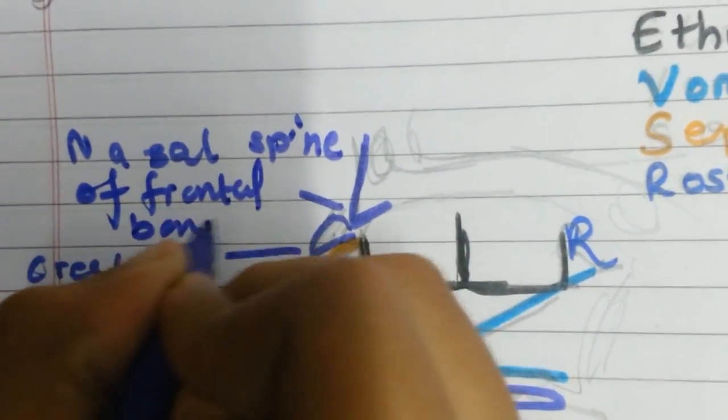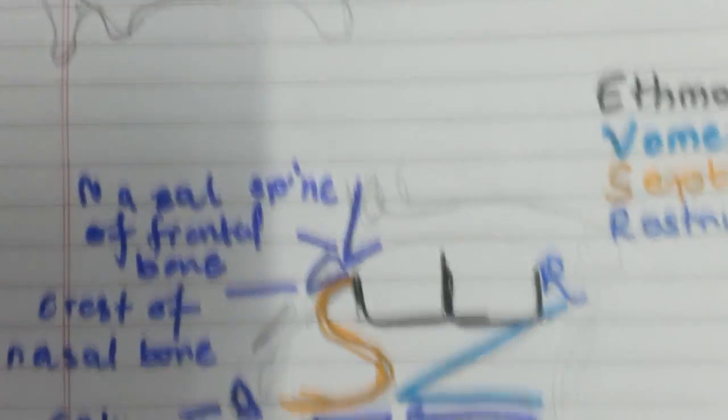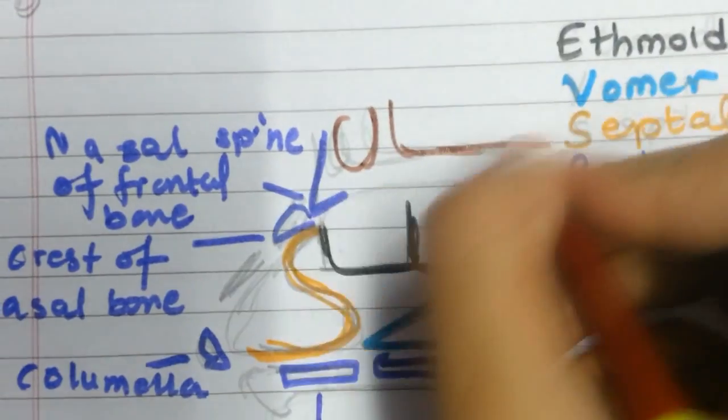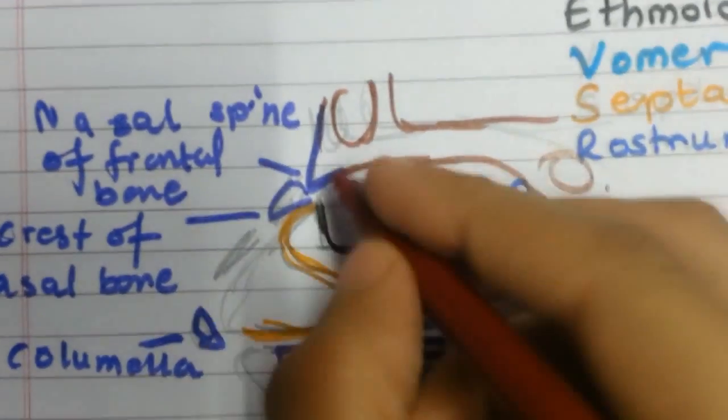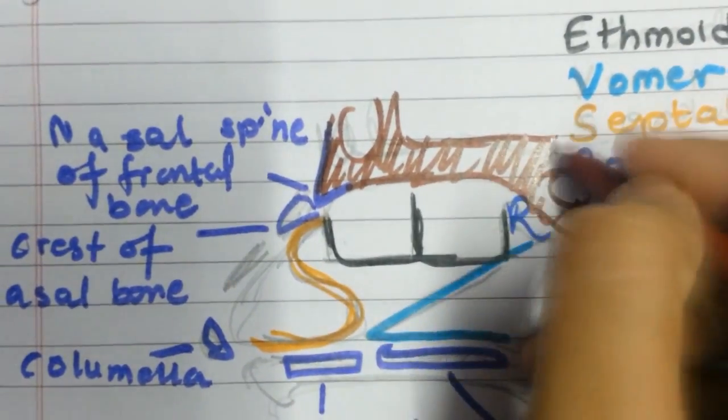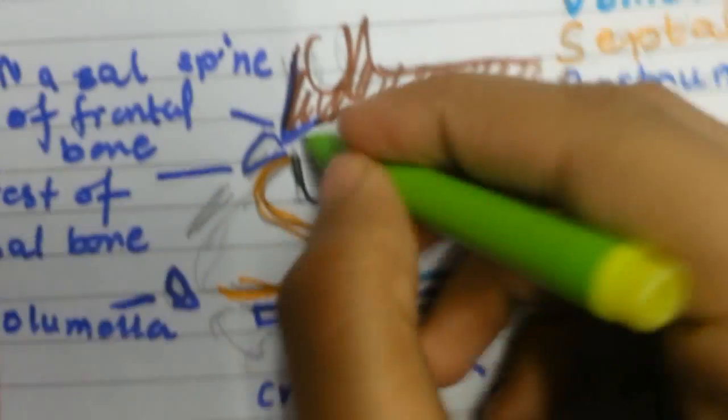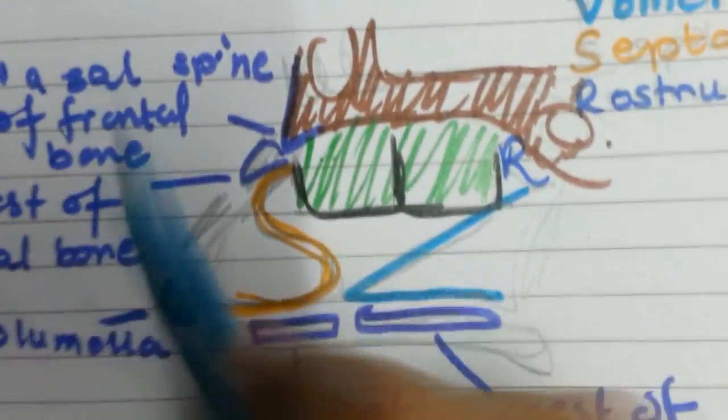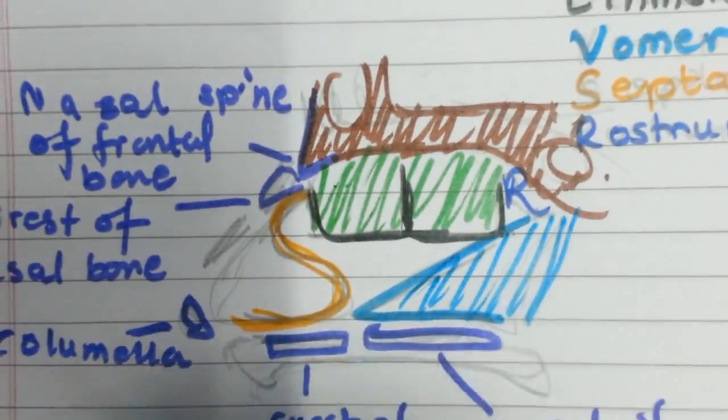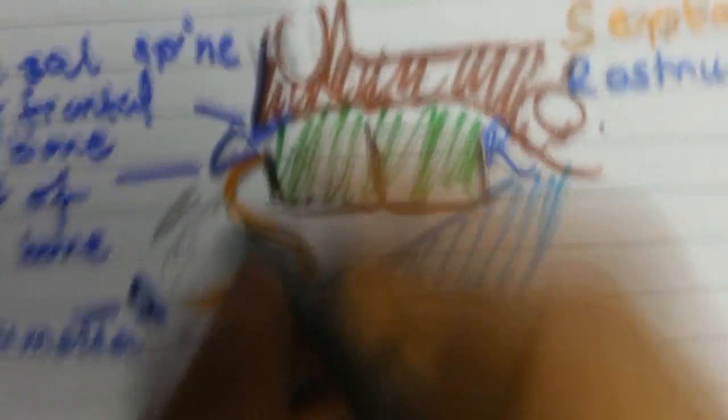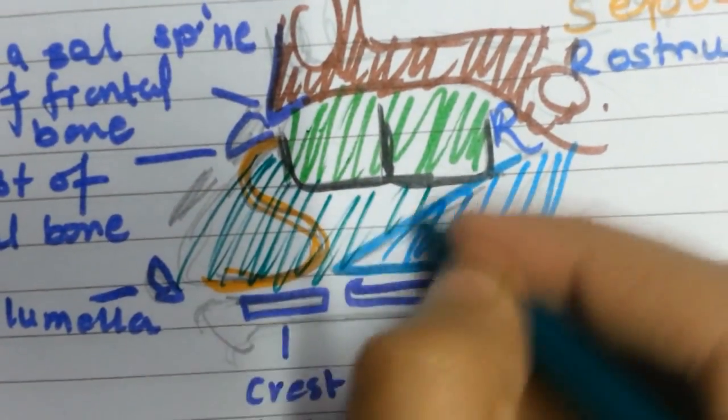In this part, I'm making the diagram look better by coloring the frontal bone brown, the ethmoid green, and the vomer blue. This part is dark green all over the nasal septum because I couldn't find my orange color.